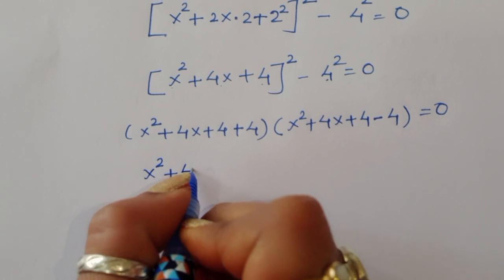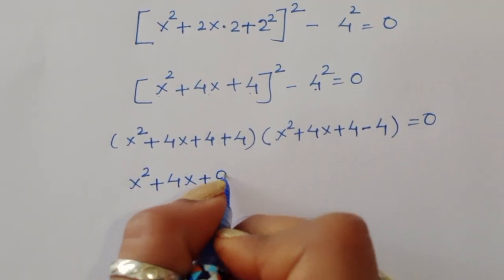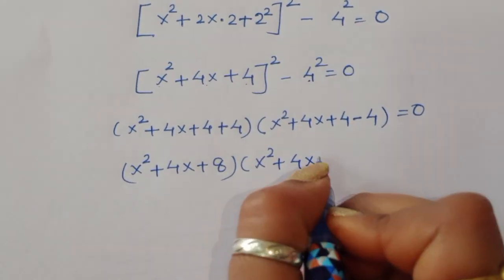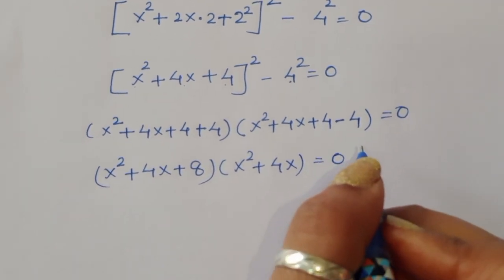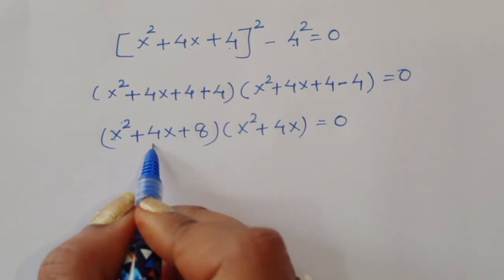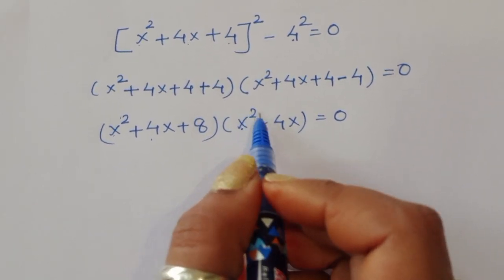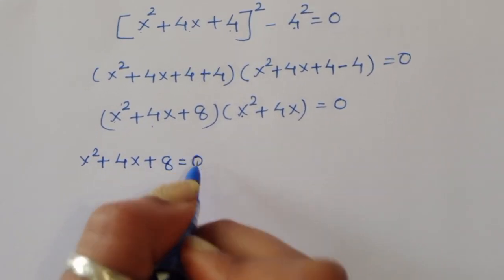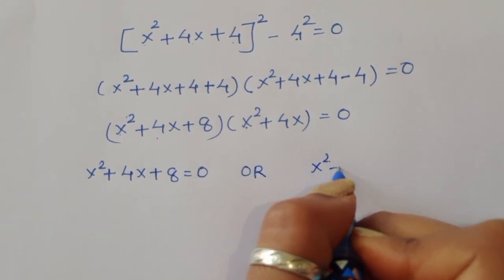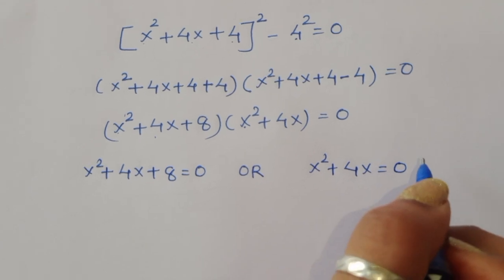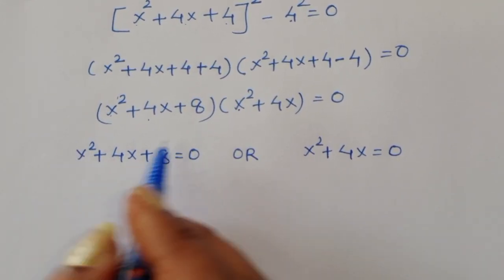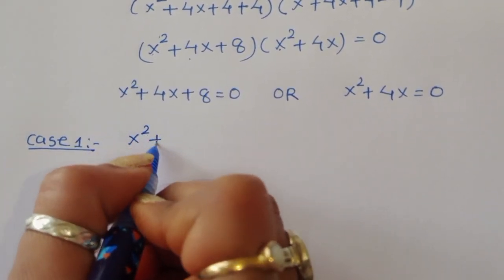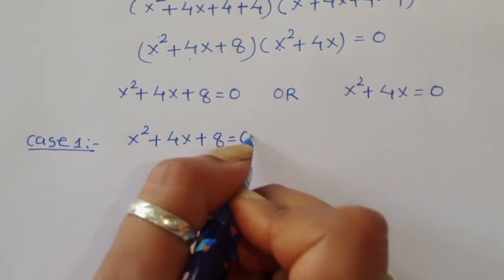So we get two equations: the first one is x² + 4x + 8 = 0, and the second one is x² + 4x = 0. These are our two cases — Case 1 and Case 2.